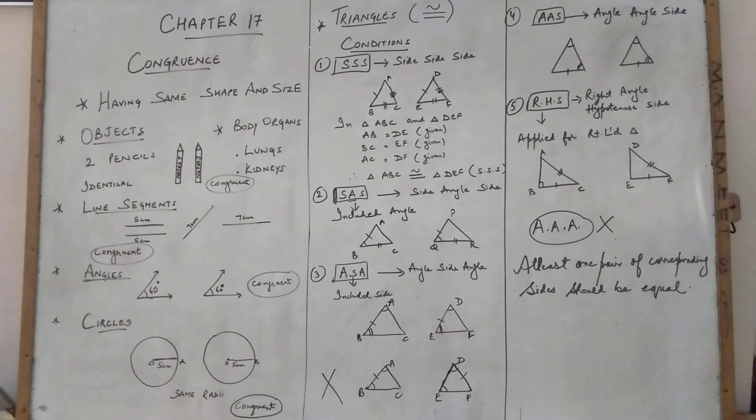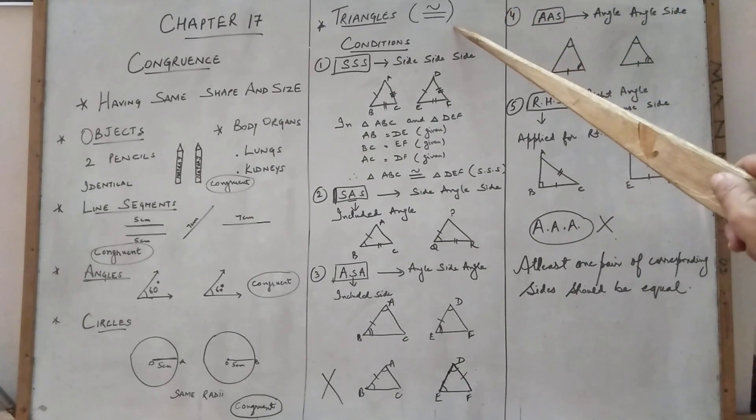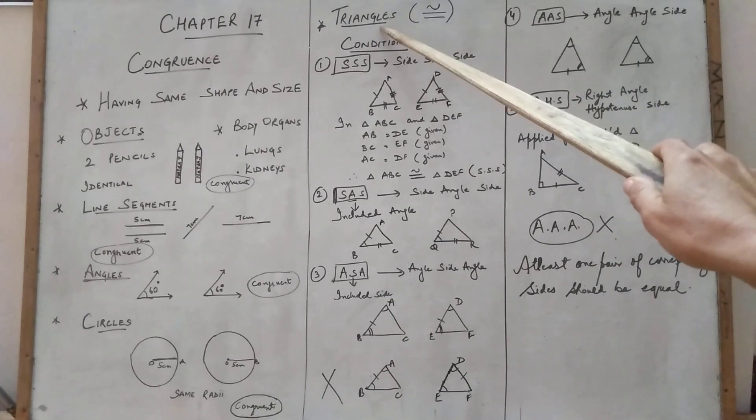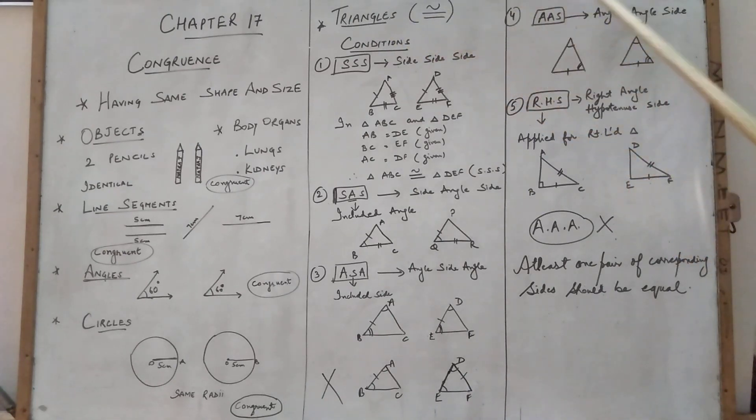Now coming to our main topics. See this children, this is the symbol of congruency. So triangles, first of all, whenever we have to congruent the triangles, there are 5 conditions, 5 rules are there.